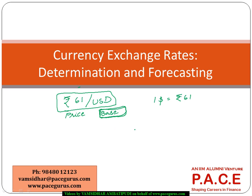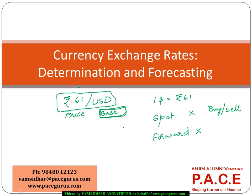In the exchange rate market we have a spot market versus a forward market, corresponding to spot and forward exchange rates. When buying or selling currencies immediately at the current market price, it is called a spot transaction. Generally, currency possession in a spot transaction happens within two days of placing the trade.